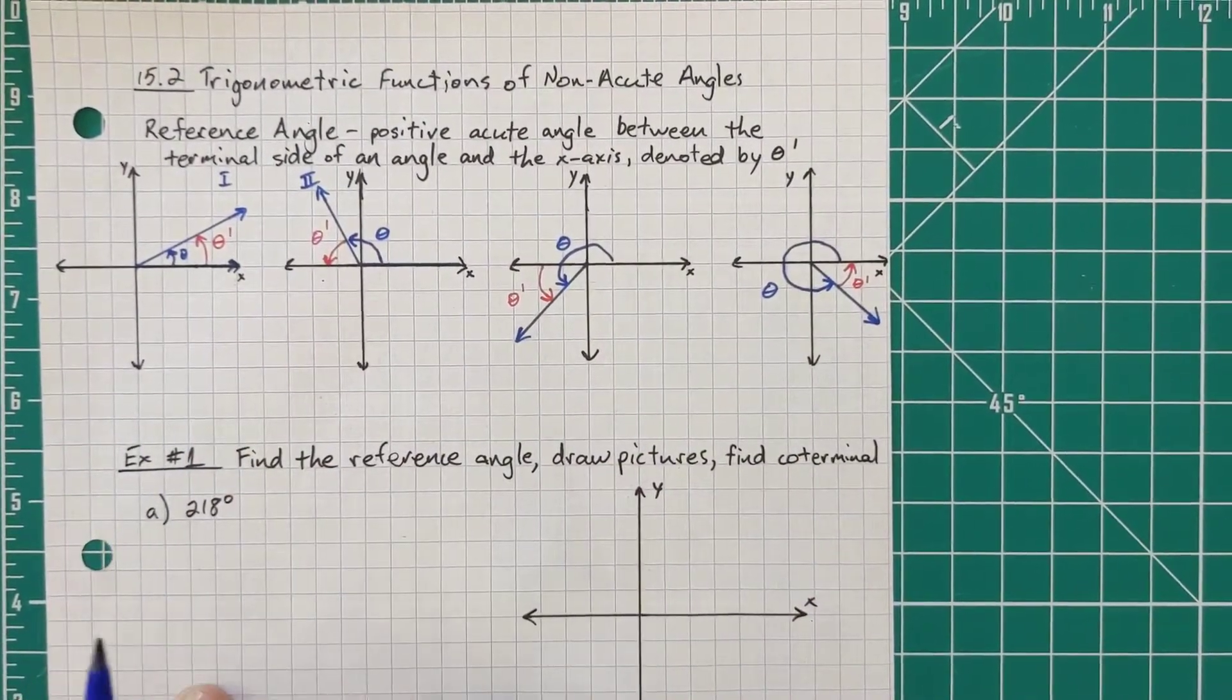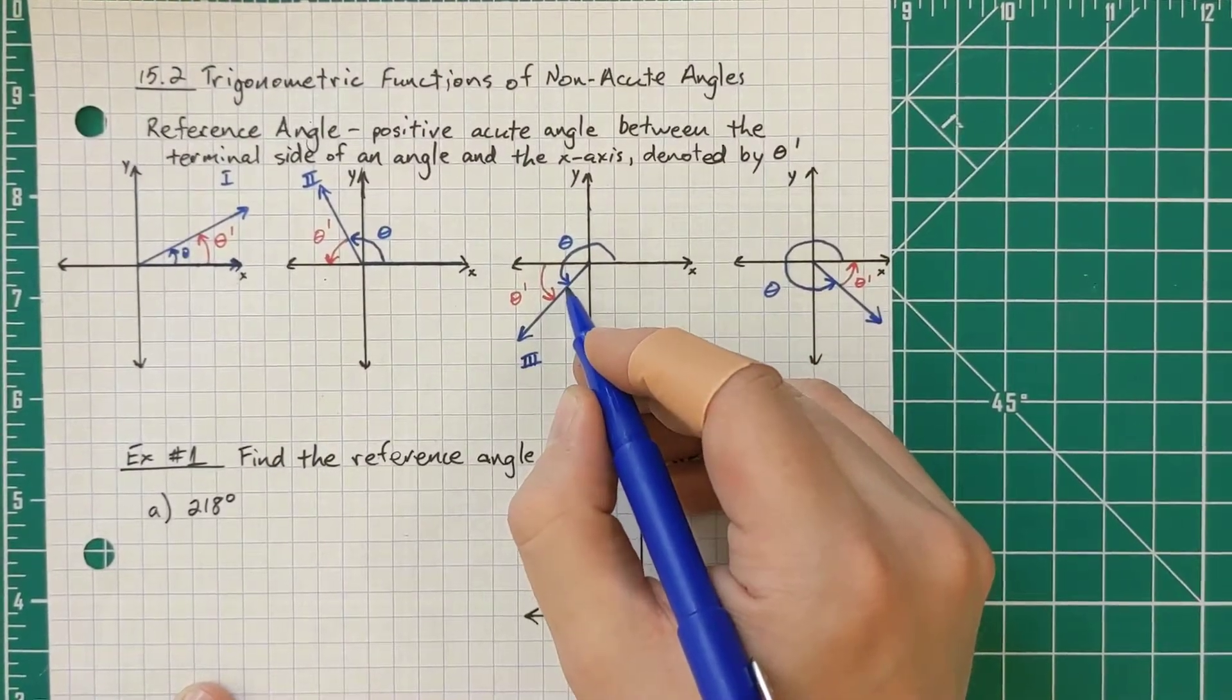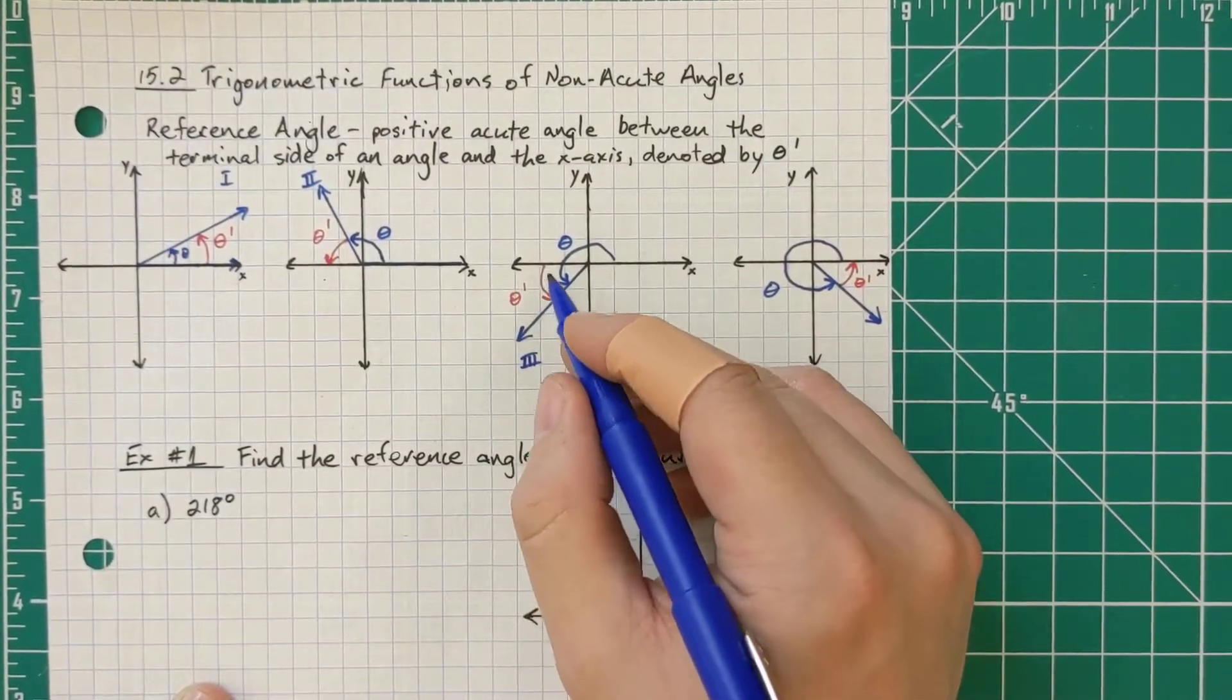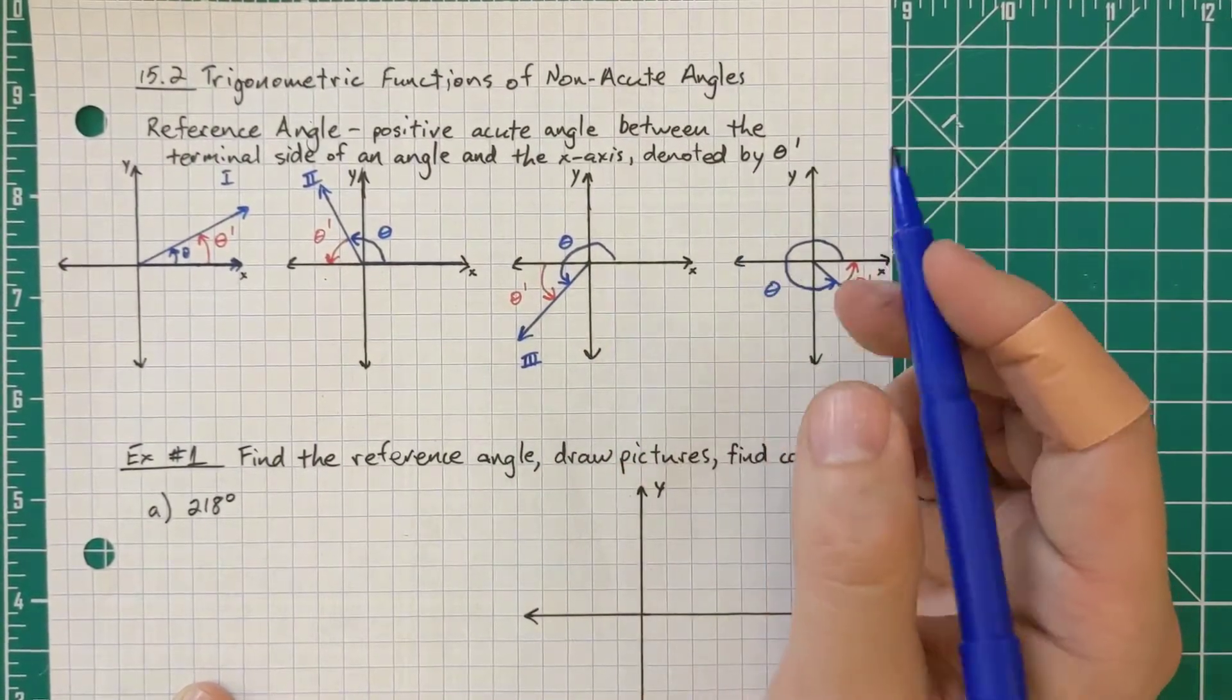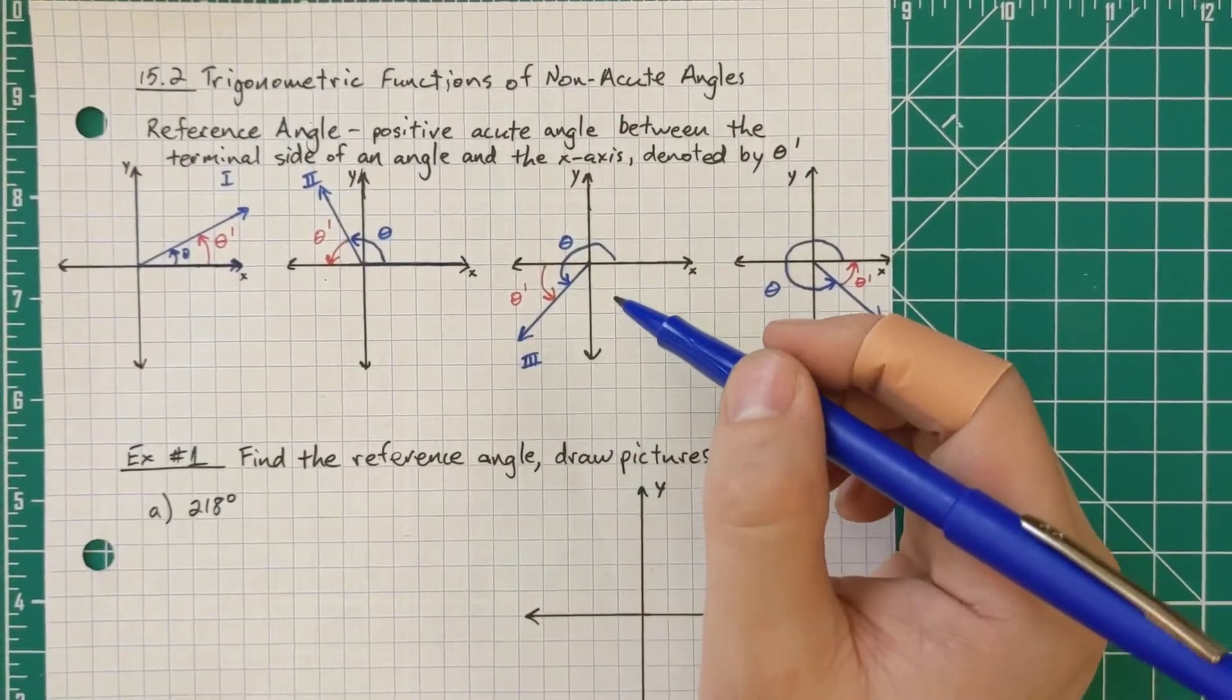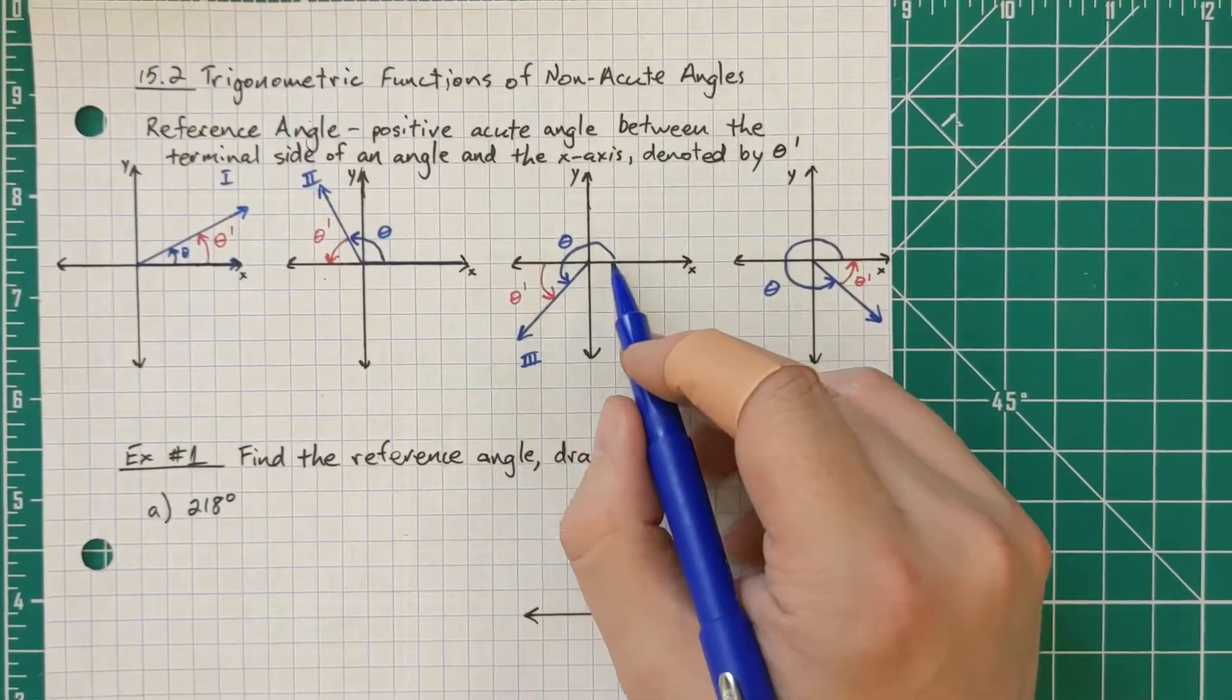If it is in the third quadrant, notice it goes all the way around more than 180 degrees but less than 270 degrees. So our theta prime starts at the x-axis and goes to our terminal side. Notice it's 180 degrees plus our reference angle. So in the third quadrant, our reference angle really is our original angle minus 180 degrees.